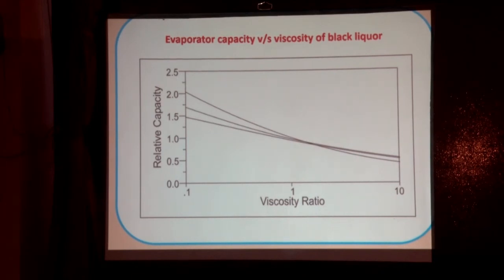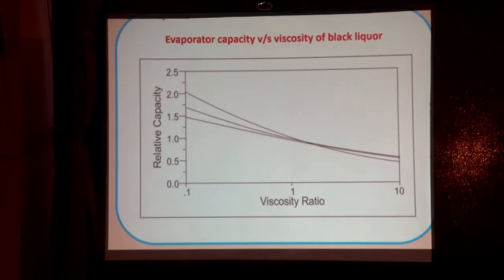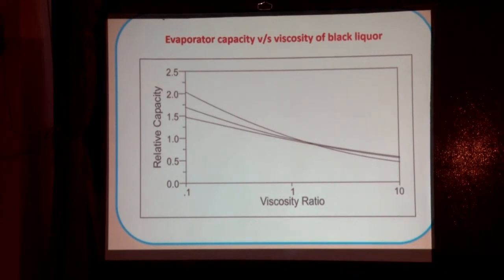One has to see how to manage viscosity and, if it increases, how to control it. Options include liquor heat treatment, working on silica removal (which plays a significant role in viscosity for rice straw), and re-evaluating pulping conditions — what RA is being used, which cooking chemicals, and how efficiently the raw materials are being washed. These all have significant impact on viscosity.